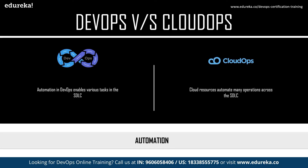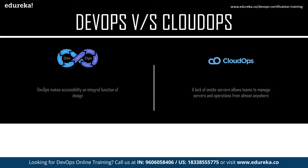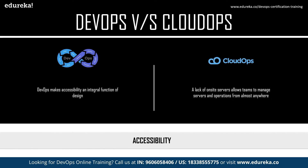The next difference is automation. Automation in DevOps enables various tasks in the software development lifecycle, and similarly in cloud ops, cloud resources automate many operations across the software development lifecycle.